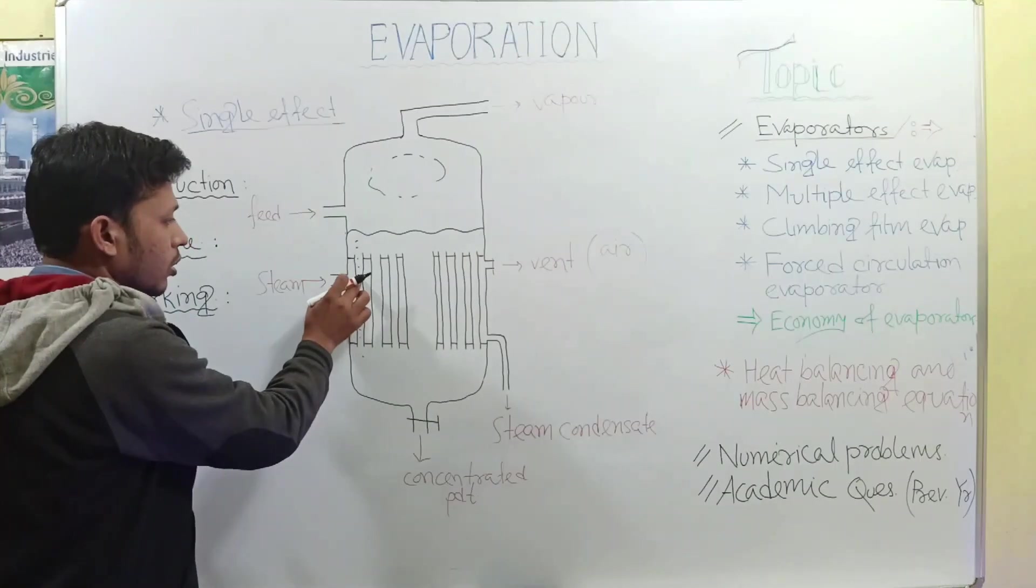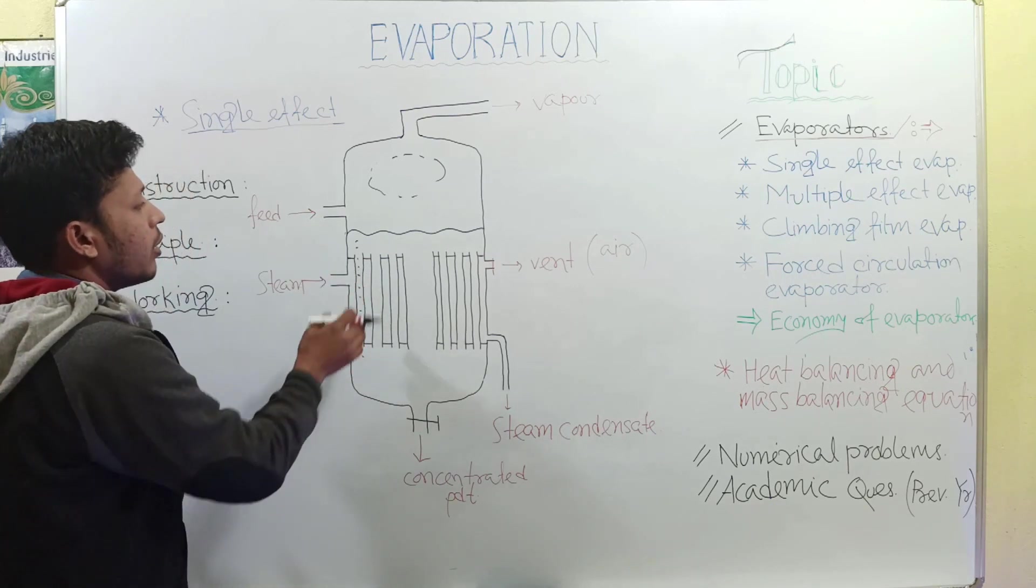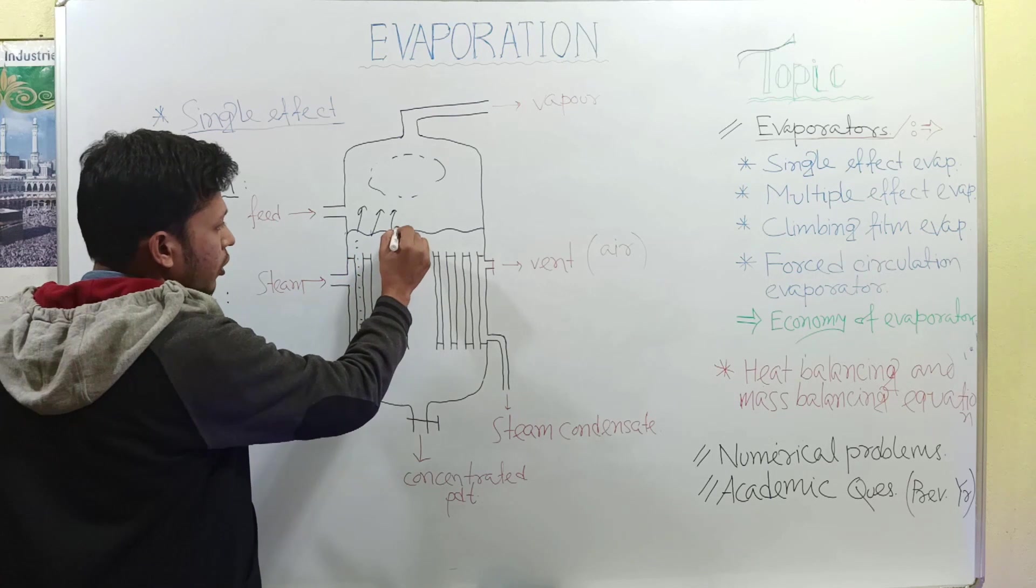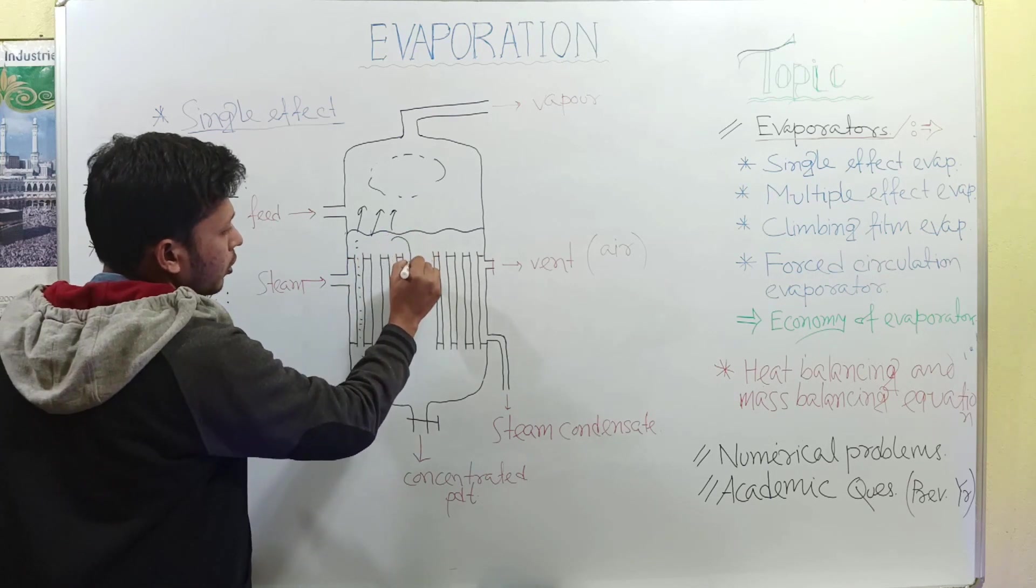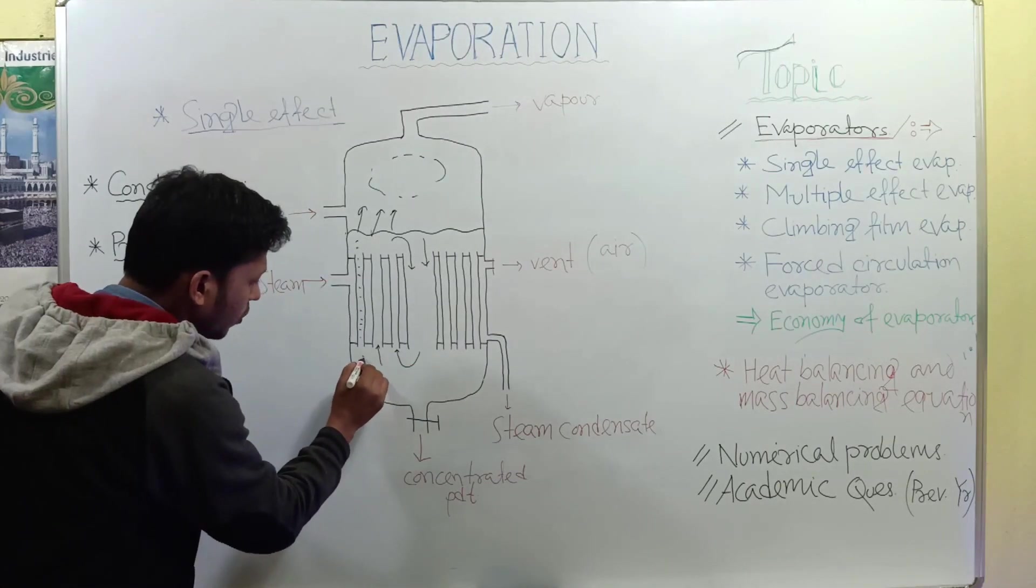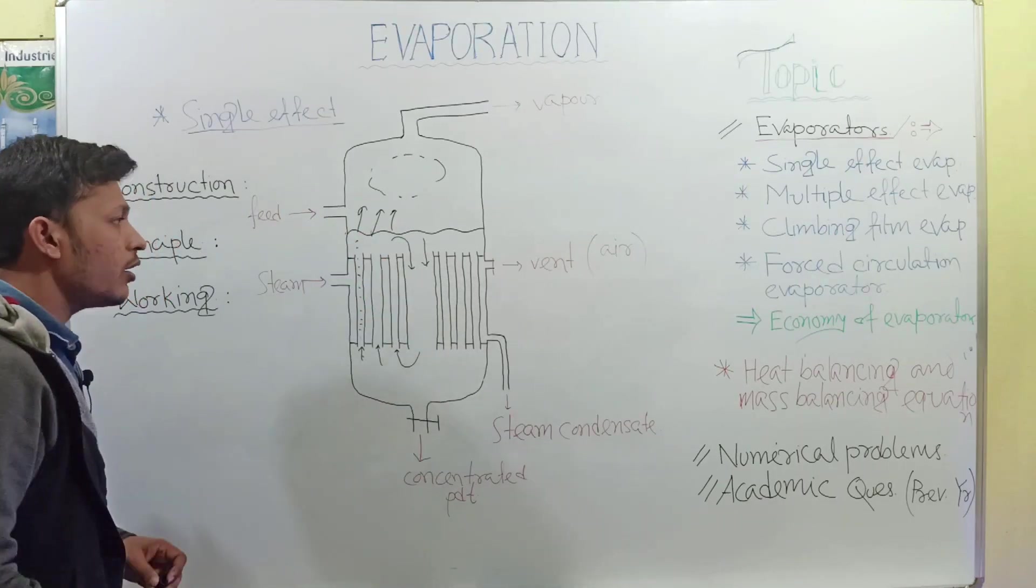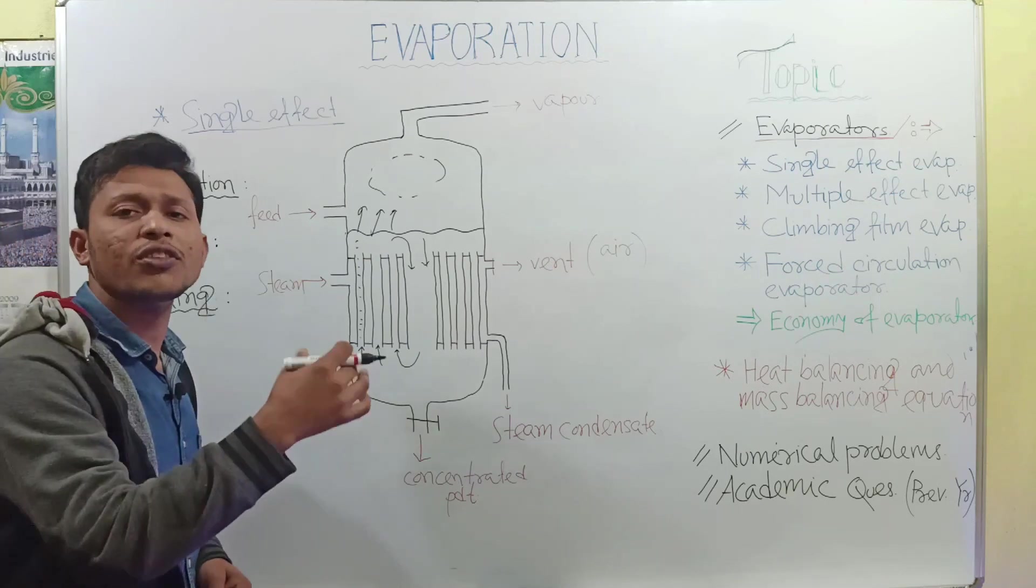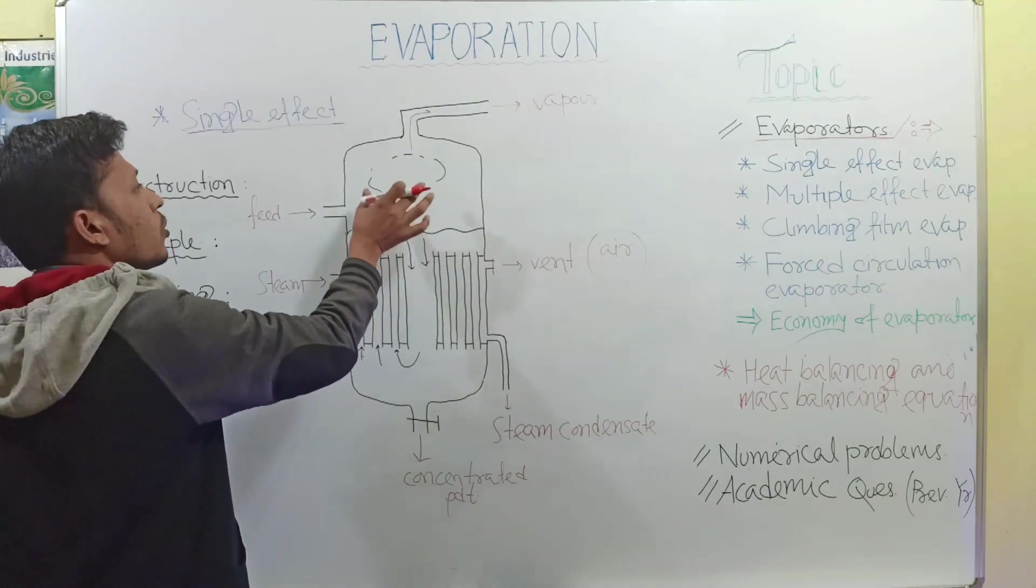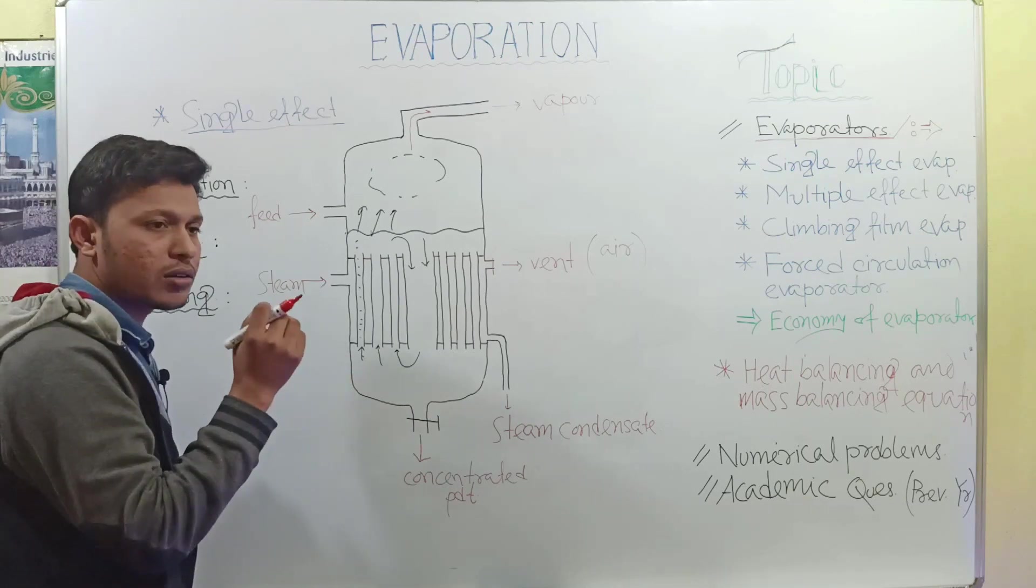When you provide steam, this steam is introduced into the tube where feed is present. This steam comes to contact with the feed, and this feed gains temperature and starts to boil and form vapor. The less concentrated product returns through this path and again enters into this tube. As a result, this whole system forms a circulation. For more circulation, more heat transfer happens and more vapor is formed. This vapor is removed from vapor outlet, and this system continues till the desired concentrated product is formed.